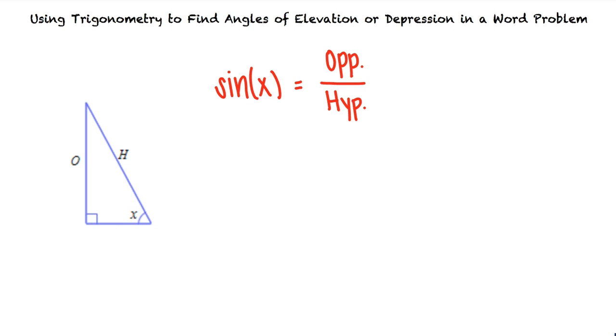Say we have a right triangle with angle x. We know that sine of x is equal to the length of the opposite side over the length of the hypotenuse, cosine of x equals the length of the adjacent side over the length of the hypotenuse, and tangent x equals the length of the opposite side over the length of the adjacent side. So we will need to know these identities in order to solve word problems.